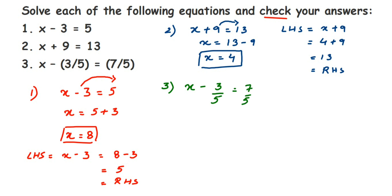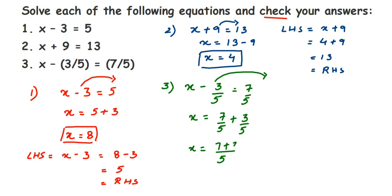For x minus 3/5 equal to 7/5, I transpose minus 3/5 to the other side — the sign changes to plus — so x equals 7/5 plus 3/5. Since the denominators are the same, we add the numerators: 7 plus 3 is 10, giving x equal to 10/5.